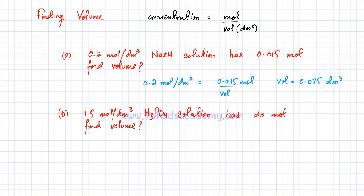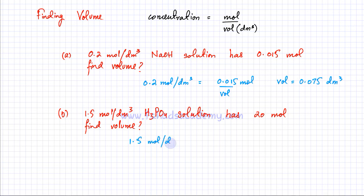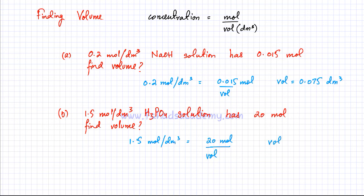In part (b), H₃PO₄ has a concentration of 1.5 mol/dm³ and 20 moles. Using 1.5 = 20 / volume, solving: volume = 20 / 1.5 ≈ 13.3 dm³ (to three significant figures).